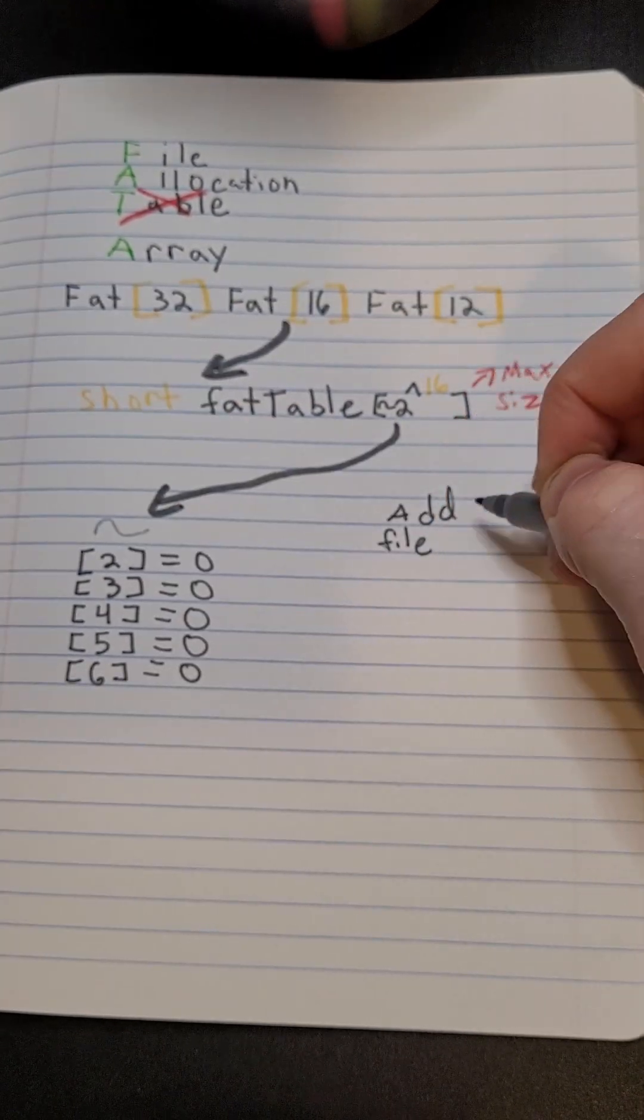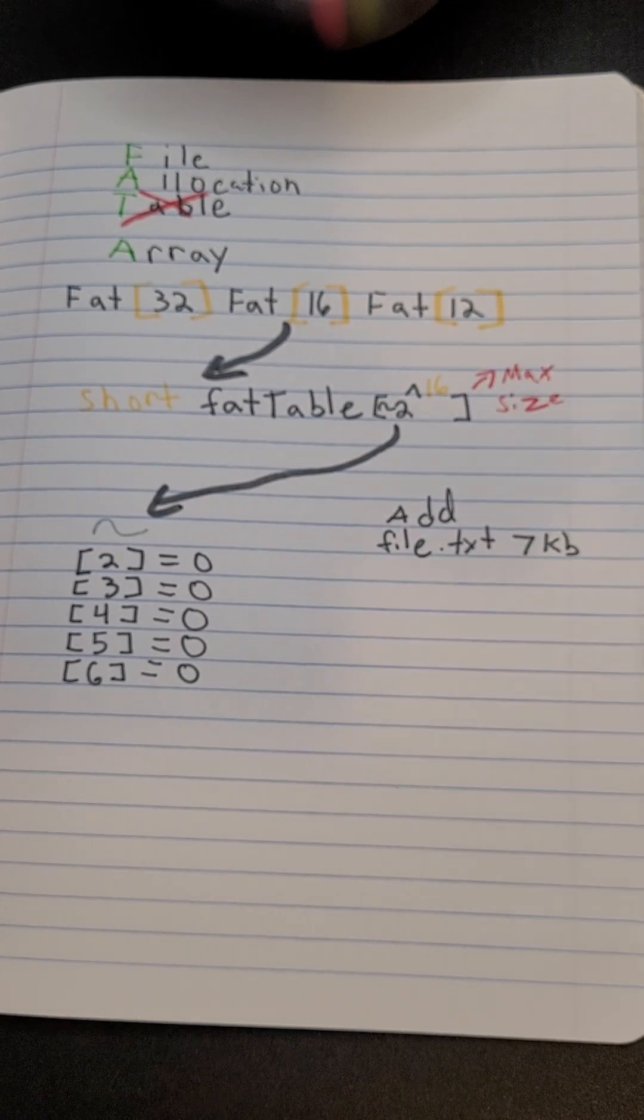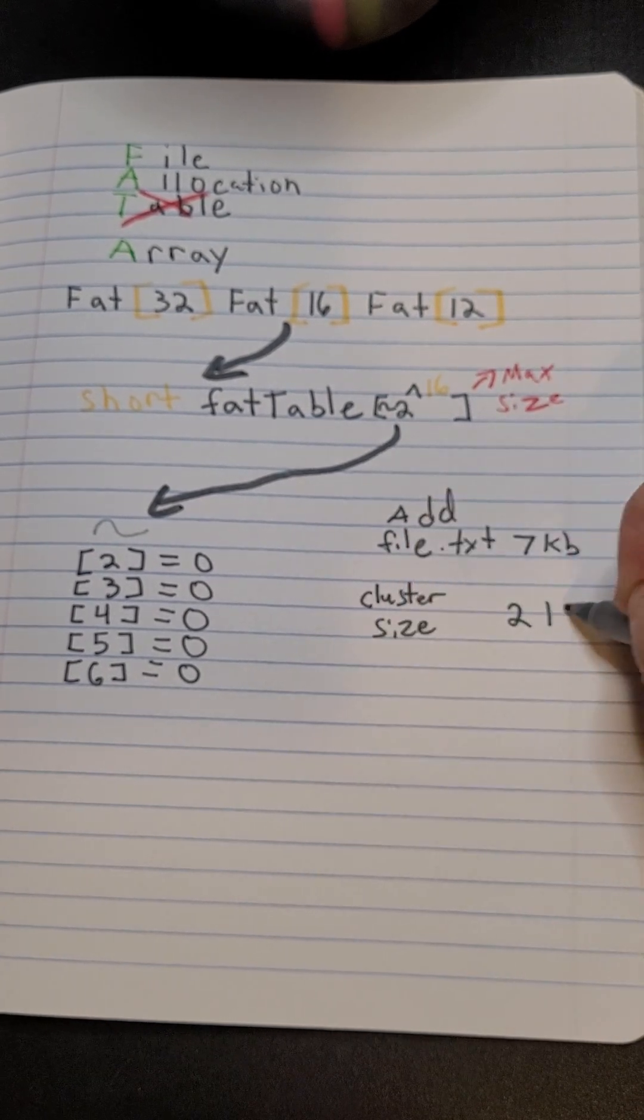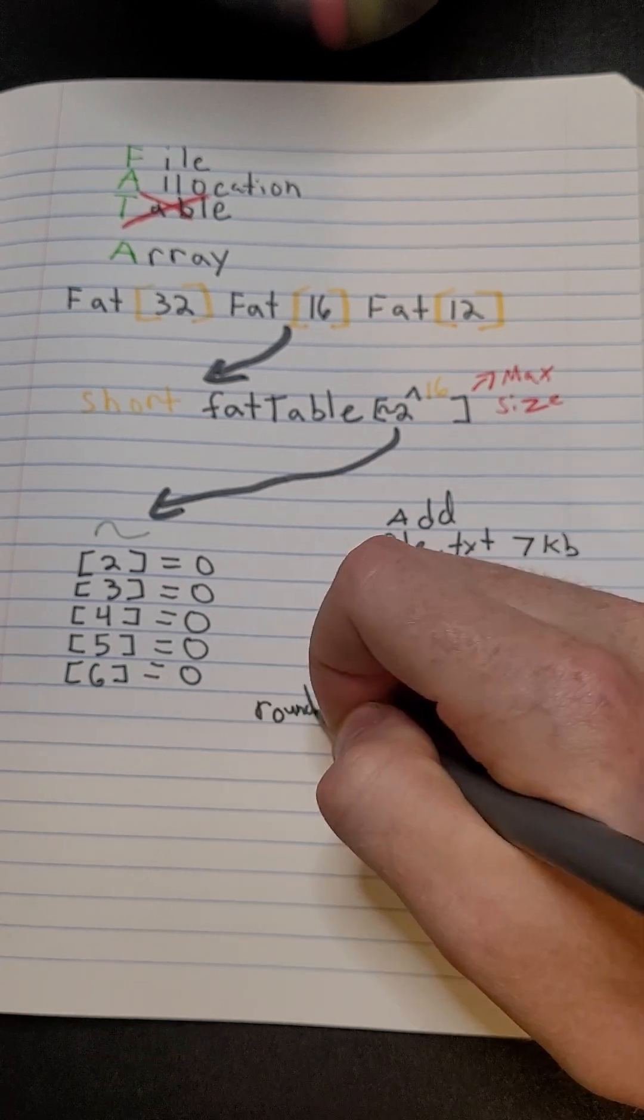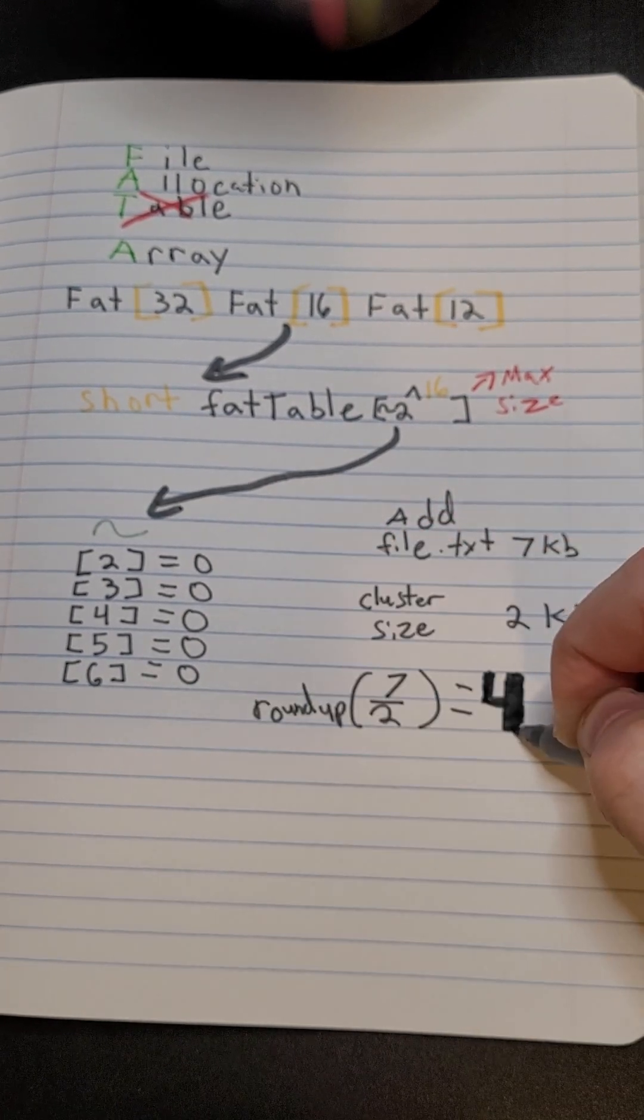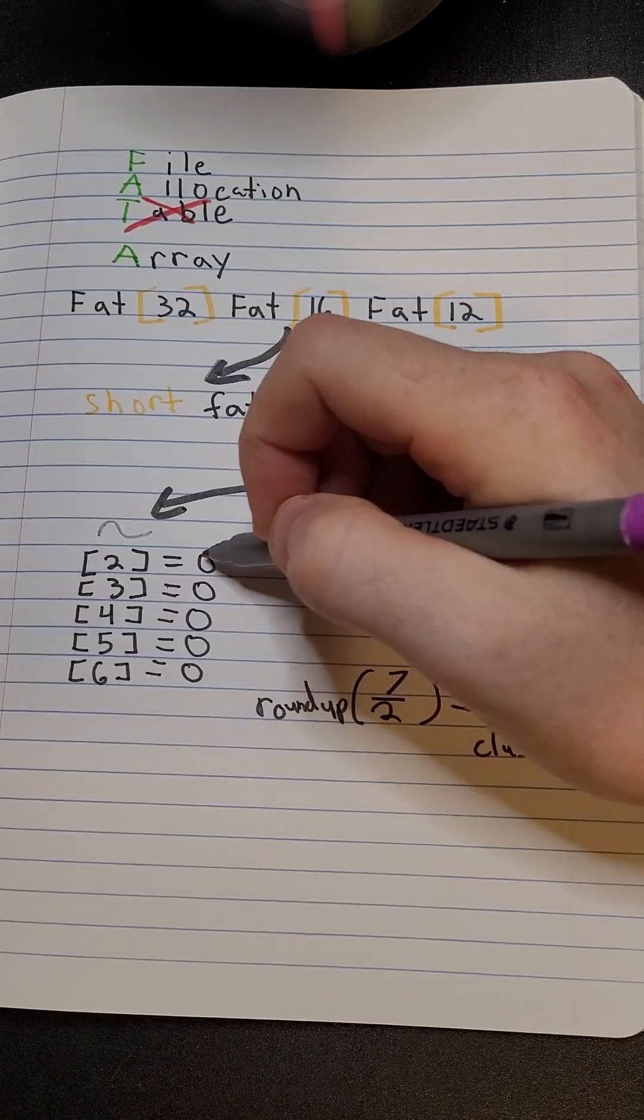So if we were to add a file that's around 7 kilobytes with a cluster size that's around 2 kilobytes, the file will take four clusters because you have to use an entire cluster.